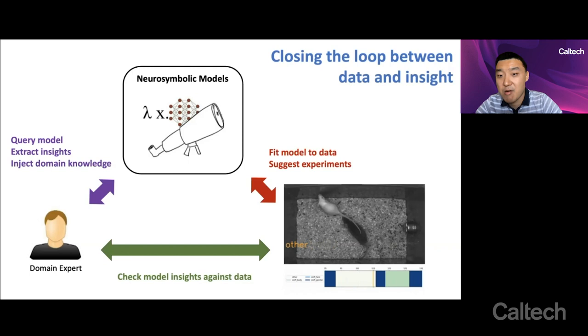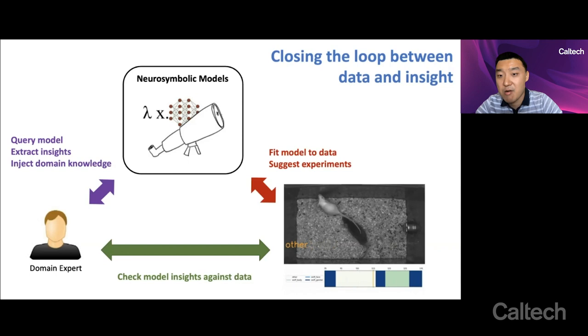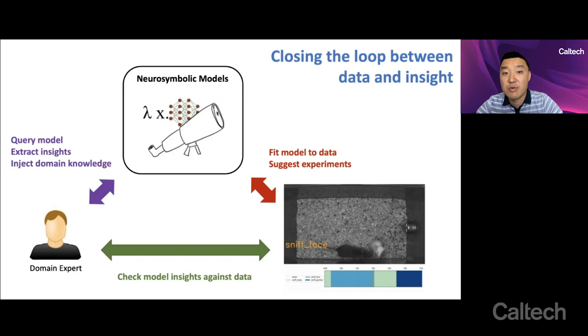of course, fit them to the data. That's the red arrow on the right. And in some cases, it might even automatically suggest experiments in an active learning sense. And of course, once you have these Neurosymbolic models, as noted by the green arrow on the bottom, the domain expert can take these insights and check it against the data. And this creates this virtuous cycle, where the domain expert can rapidly iterate and prototype to refine the models and therefore quickly lead to insight that is useful for their scientific mission.